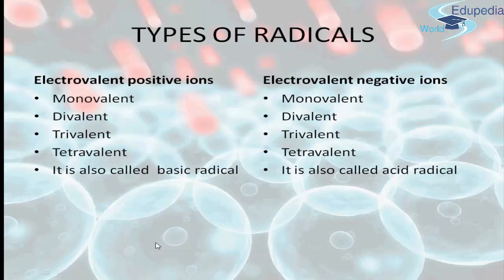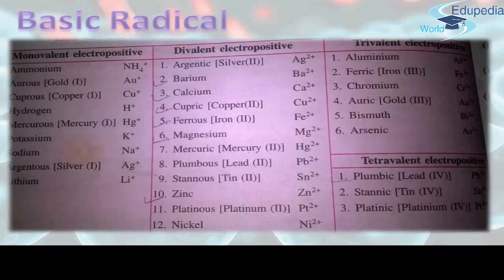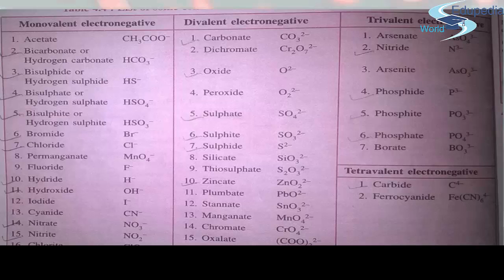So what are the types of radicals? Actually these are the types of the configuration of the atom, the electrovalent ions. We have just discussed what are the electrovalent ions. They behave in the manner to lose or gain electrons to achieve an inert gas electronic configuration. We have two kinds: positive ions and negative ions. We have monovalent, divalent, trivalent, and tetravalent, and here too we have monovalent, divalent, trivalent, and tetravalent. Electropositive ions we call them basic radicals, and the negative ions we call them acid radicals. You can see some basic radicals here and the acid radicals.